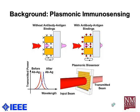Here is the background information about plasmonic immunosensing. Our approach is to use a metal nanostructure to detect the presence of the target parasite — in this case, malaria pathogens. This nanostructure, fabricated on a metal film, is used to excite a surface plasmon wave. In order to use this nanostructure as a plasmonic sensor, we immobilize target antibodies that can identify malaria pathogens onto the sensor surface.